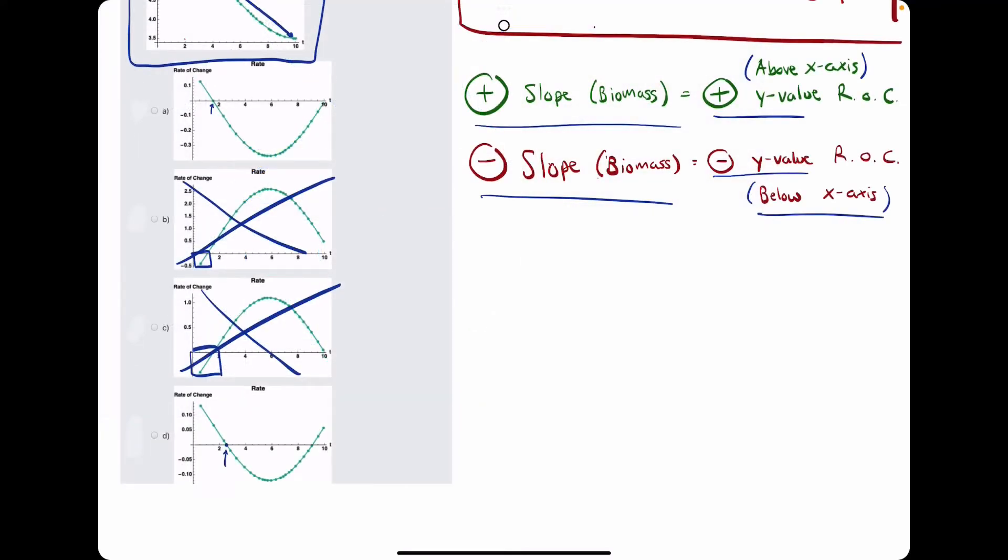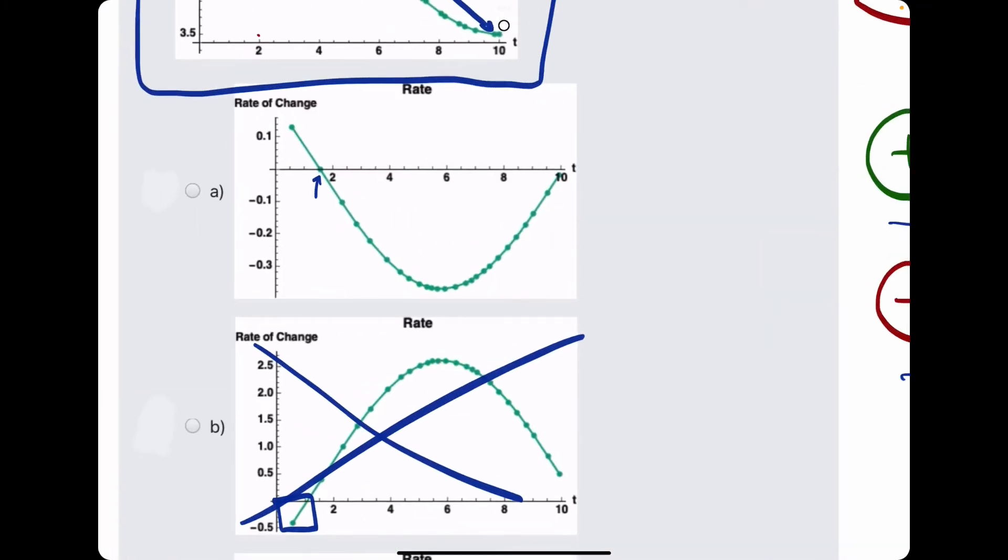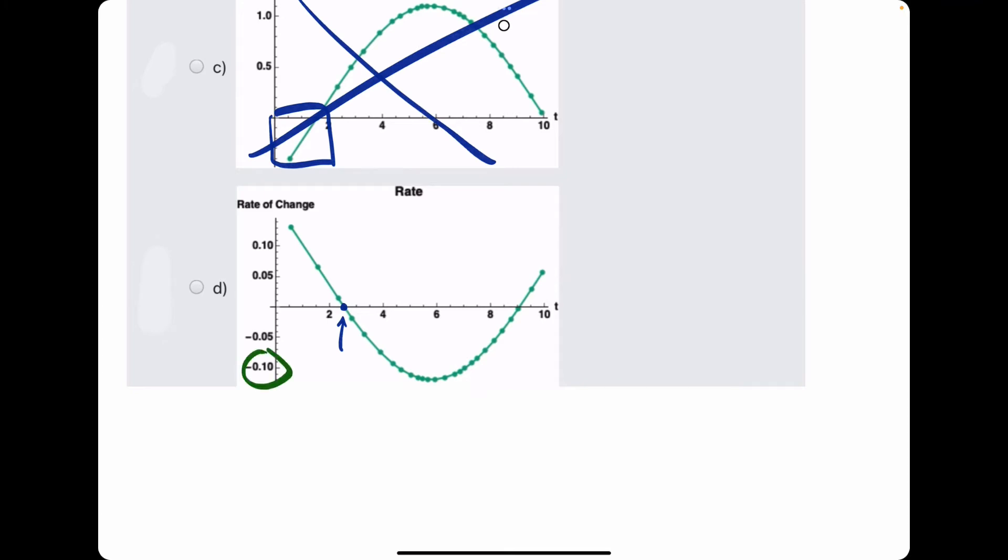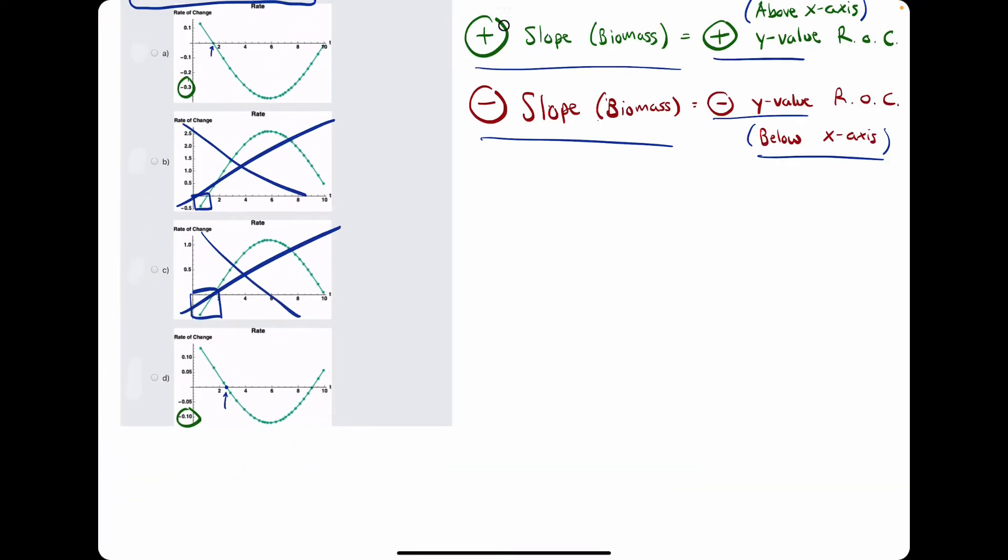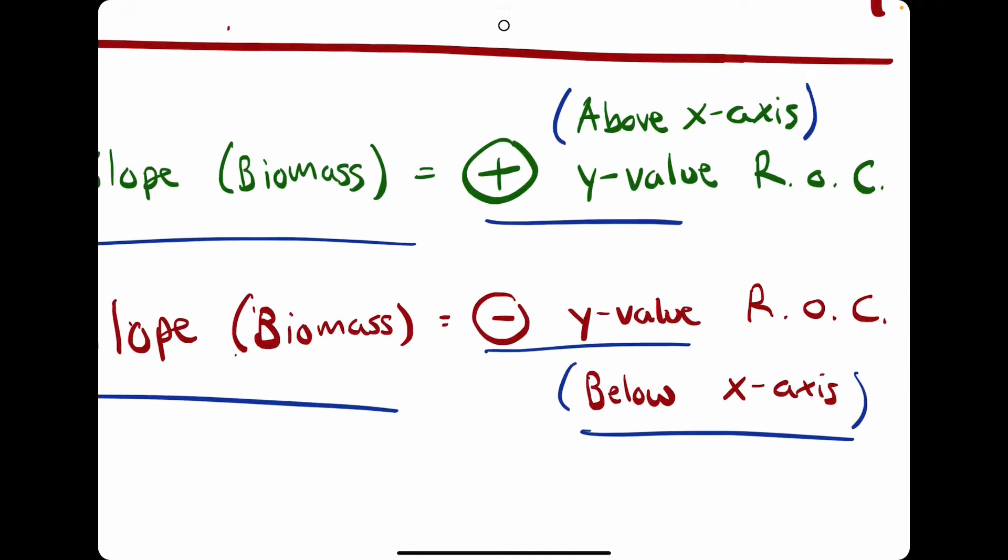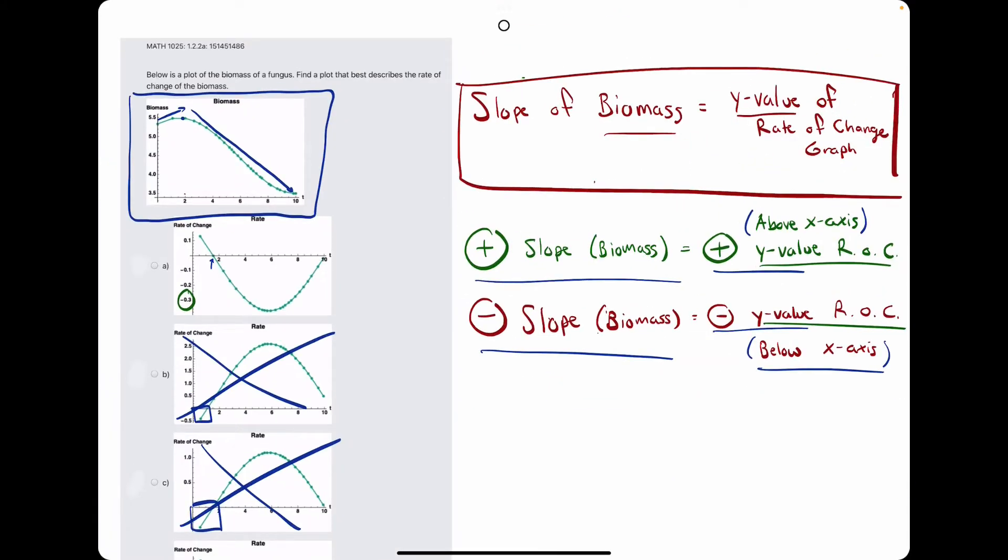The other difference about options A and D have to do with the y values that they have. So, the question is, how can we identify which graph is correct based on its y values? Well, what do we know about the y values of rate of change graphs? We know that the y values of the rate of change graphs correspond to the slope values of the biomass graph.